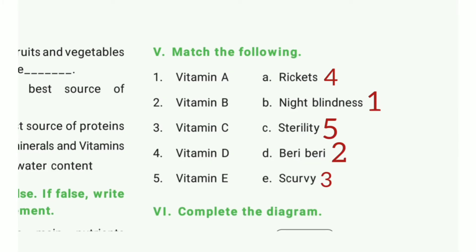Match the following. Vitamin A — night blindness. Vitamin B — beriberi. Vitamin C — scurvy. Vitamin D — rickets. Vitamin E — sterility.